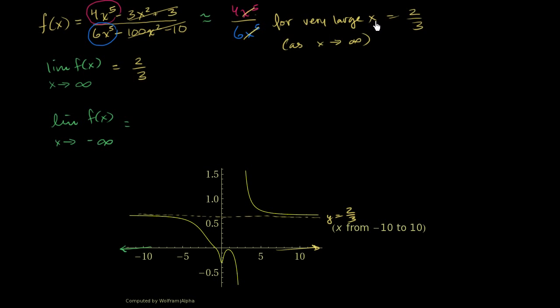So this is true for very large x's and also for very negative x's. As x approaches negative infinity, this is also true. And then the x to the fifth over the x to the fifth is going to cancel out. These are the dominant terms, and we're going to get it equaling 2 thirds. And once again, you see that in the graph here.